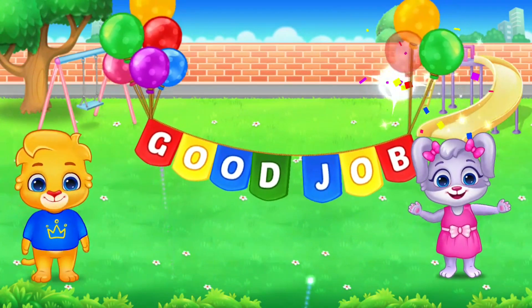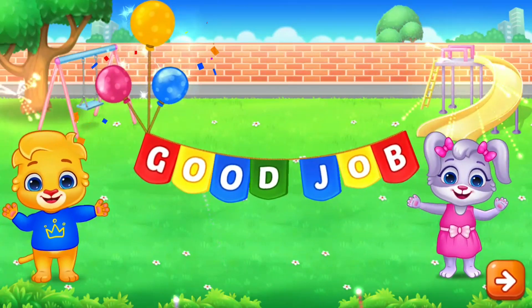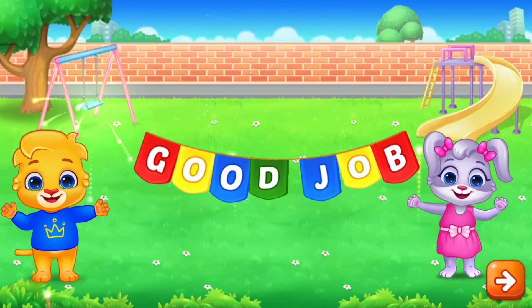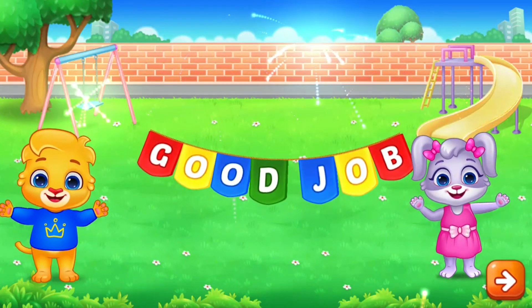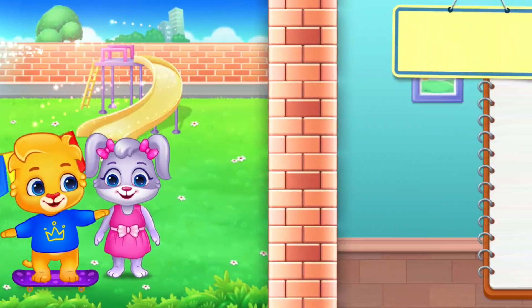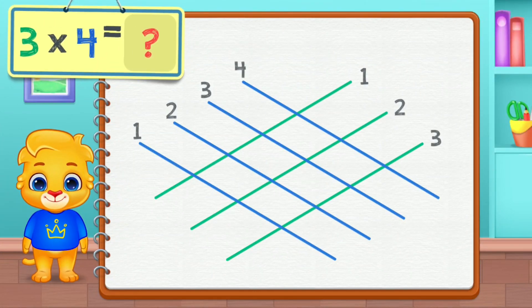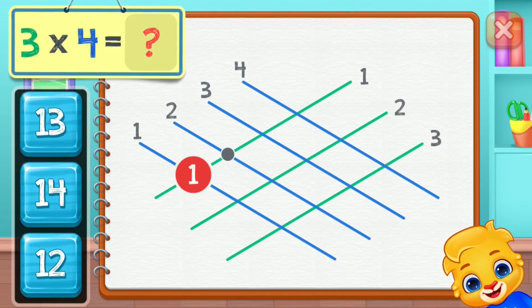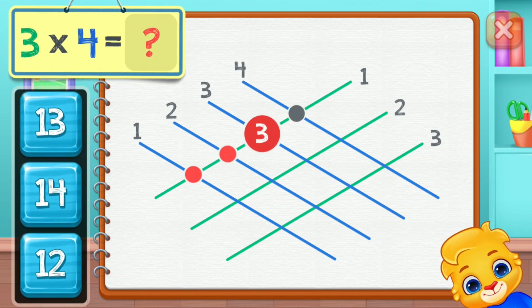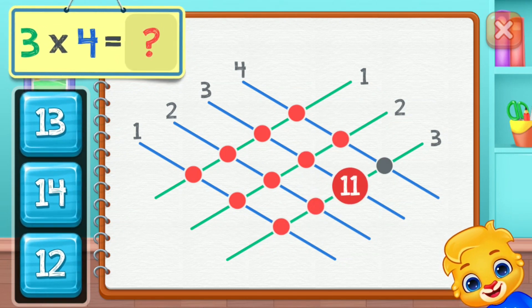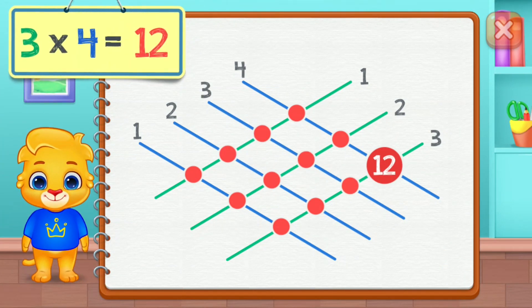Good job! One, two, three, four, five, six, seven, eight, nine, ten, eleven, twelve. Three times four equals twelve.